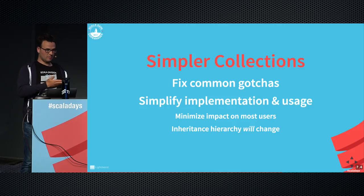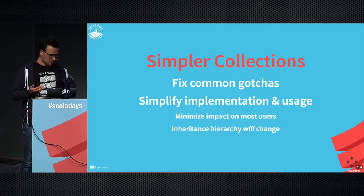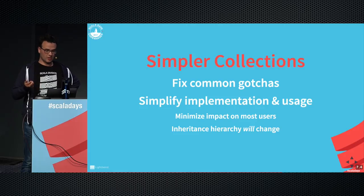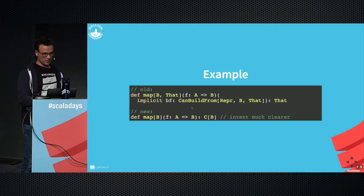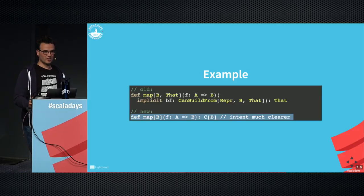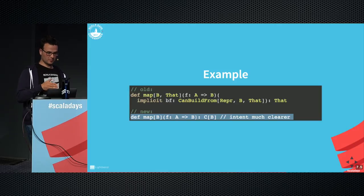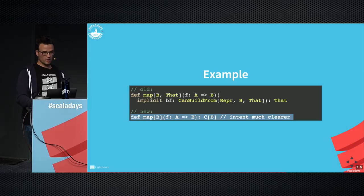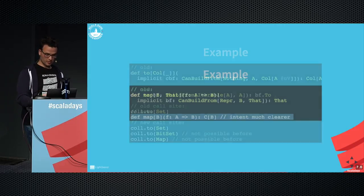The idea with the collections rewrite is not to just rewrite from scratch but to fix the gotchas we've become aware of over the years and simplify the internal implementation, which may have been over-factored just a little bit. We recently found that removing the parallel collections actually speeds up the compiler because the parent types of the collections become so much simpler. We're trying hard to minimize impact on users — if you're just using collections normally and not doing crazy stuff like CanBuildFrom or breakout, you probably won't notice much of the changes.